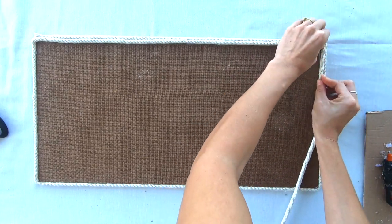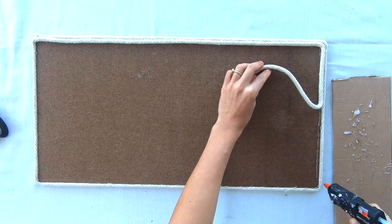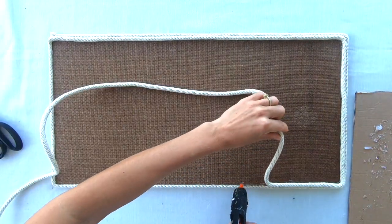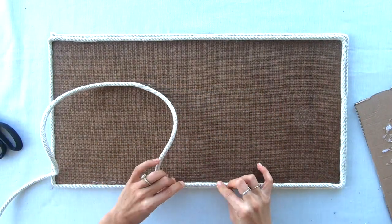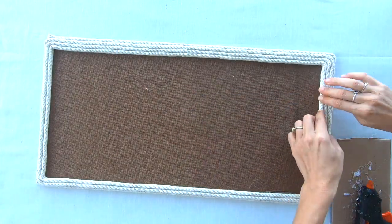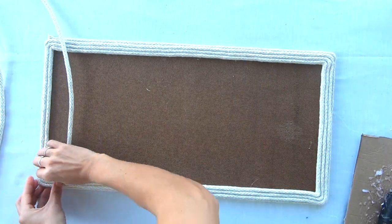Now we're basically going to be going around the board gluing the rope down. Try to glue your rope as close to the rope on the sides as possible so that there are no gaps. And you're going to continue doing this until you get to the center of the board. And remember, when you get to the corners, keep them tight and try and make as much of a right angle as you can.